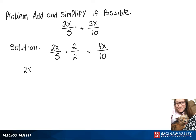Then we can rewrite our original equation, 2x over 5 plus 3x over 10, as 4x over 10 plus 3x over 10.